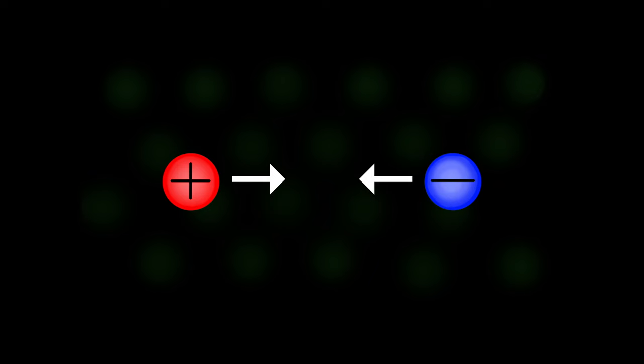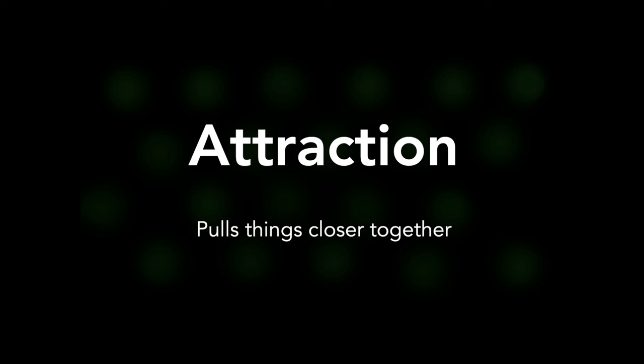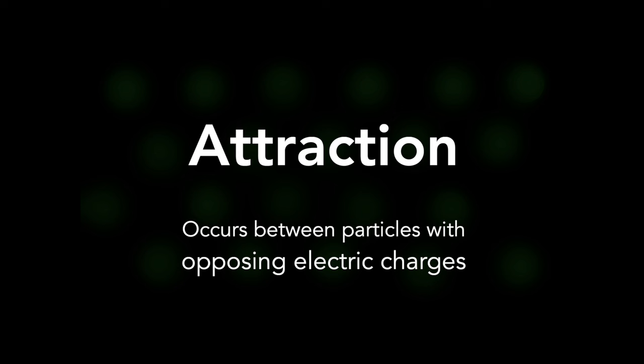What if the two particles have opposite charges? This would mean that one of them is positively charged and the other negatively charged. This time, we observe the particles being pulled closer to each other. Instead of repulsion, they experience attraction through electrostatic forces. Based on this observation, we can state that particles with opposing charges attract each other.